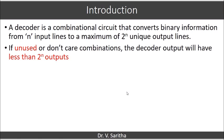If unused or don't care combinations are existing, then there is a chance for the decoder to have outputs less than 2 to the power of n. When we are considering n input lines there will be 2 to the power of n combinations at the max, and when you are having some unused states then obviously we will be having less than 2 to the power of n output states.